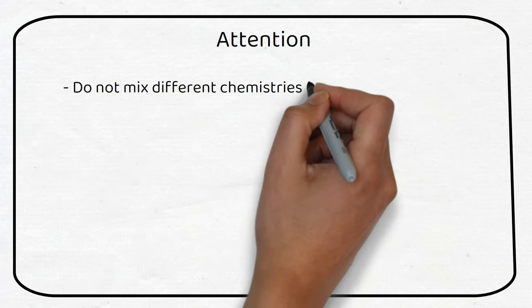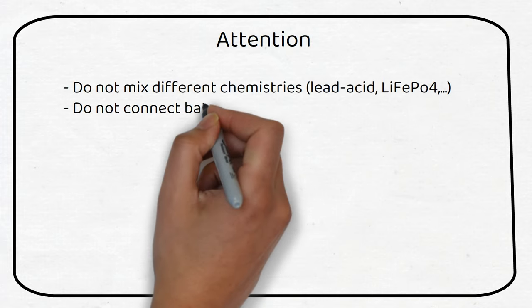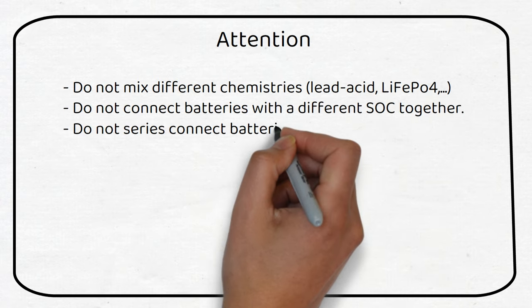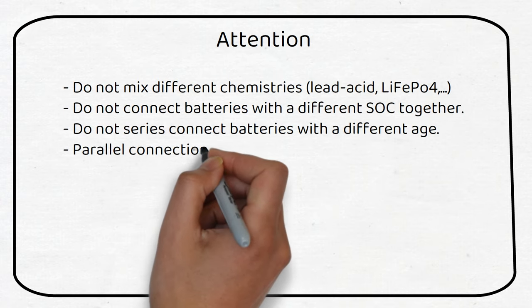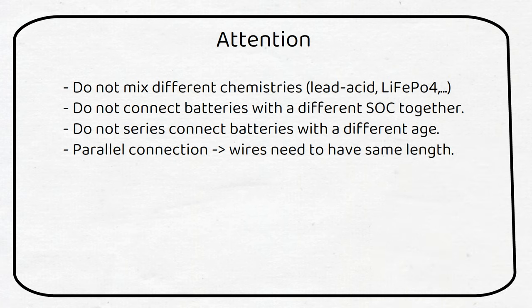There are a few items we need to take into consideration when wiring our batteries together. The first one is to not mix batteries of different chemistries. Another one is to not connect batteries with a different state of charge. The inrush current will be bad for the battery. Instead bring them to the same voltage first and then connect them. Do not series connect batteries with a different age. The capacity of these will be reduced and reduce the total capacity of your battery.